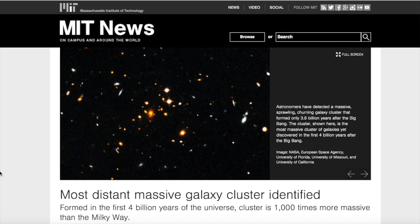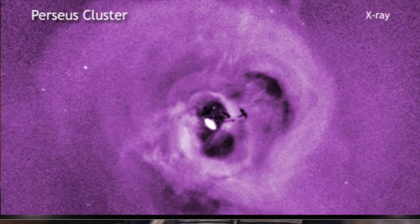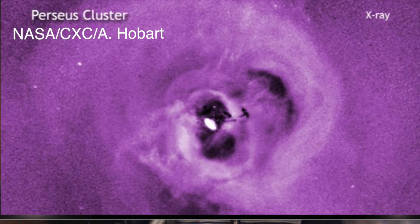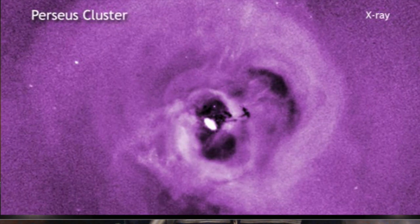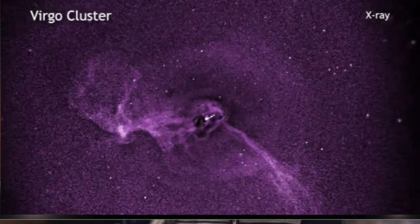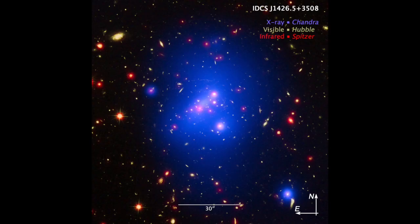Next, astronomers using NASA's great observatories have detected a massive, sprawling, churning galaxy cluster that formed only 3.8 billion years after the Big Bang, making this cluster the most distant one found yet. Galaxy clusters are conglomerations of hundreds to thousands of galaxies bound together by gravity. They are the most massive structures in the universe, and those located relatively nearby, such as the Virgo cluster, are extremely bright and easy to spot in the sky. But finding galaxy clusters that are farther away in space and further back in time is a very difficult and time-consuming thing.